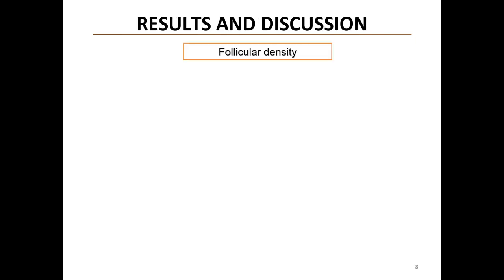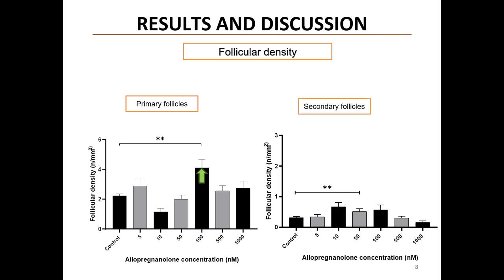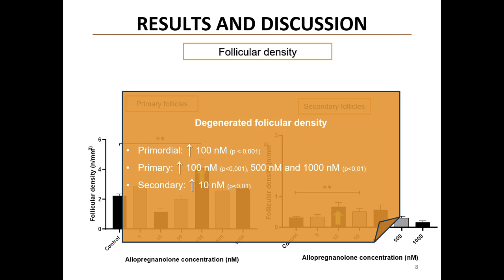Our results revealed several key findings. Allo had a significant concentration-dependent effect on follicular density. At 100 nM, primary follicular density increased. Similarly, secondary follicular density was significantly higher at 10 nM. Meanwhile, degeneration rates were higher at various concentrations, mainly in primary follicles at 100, 500 and 1000 nM.